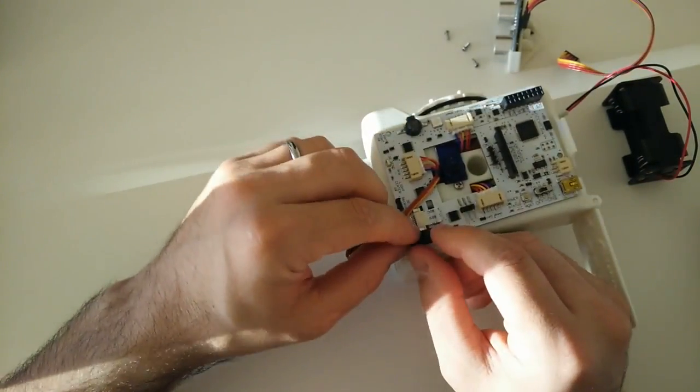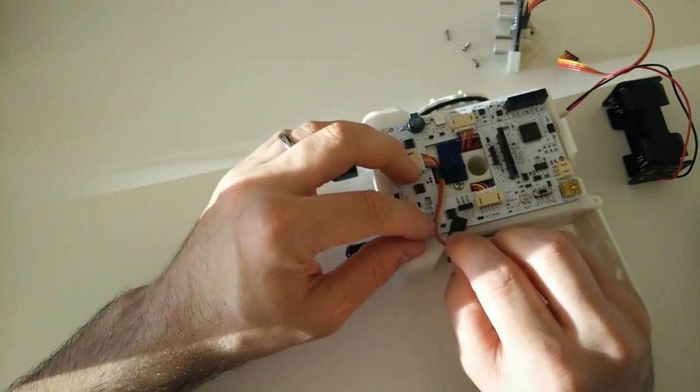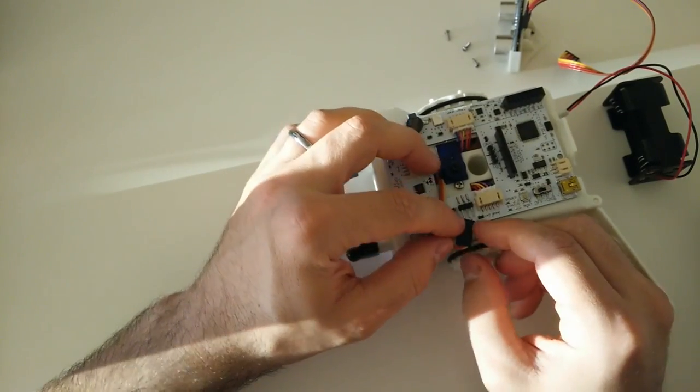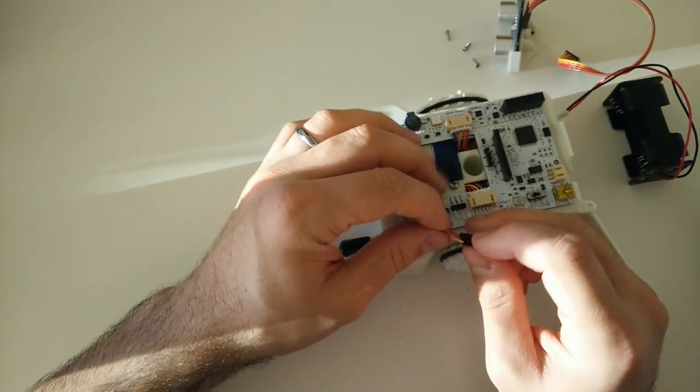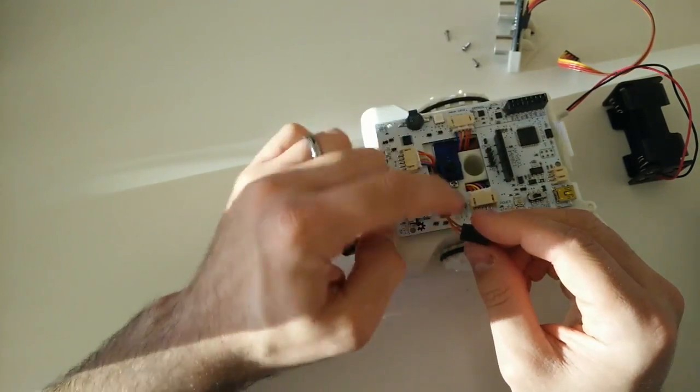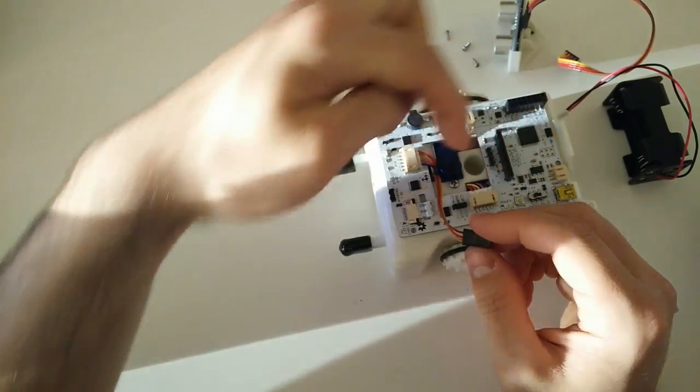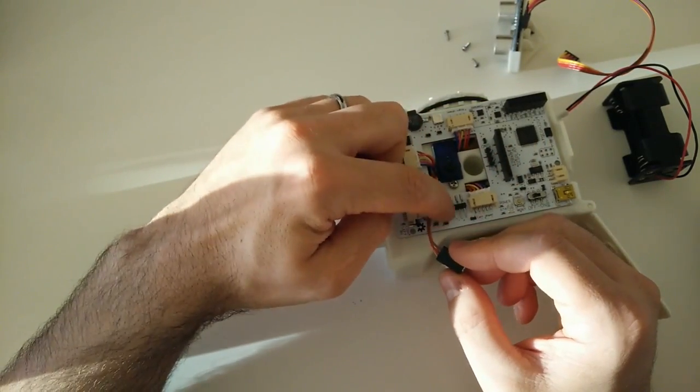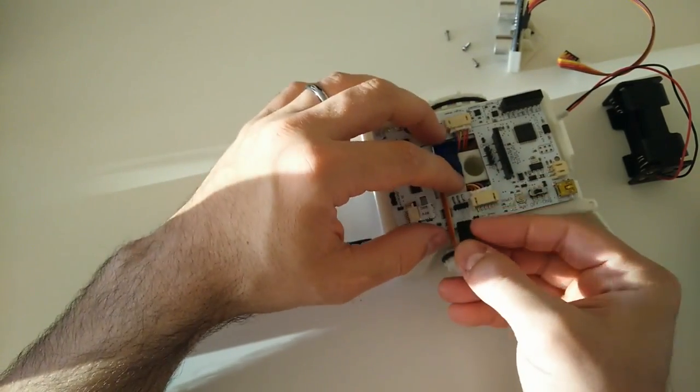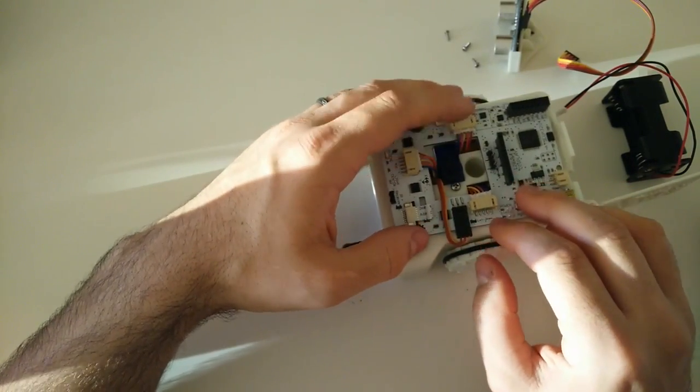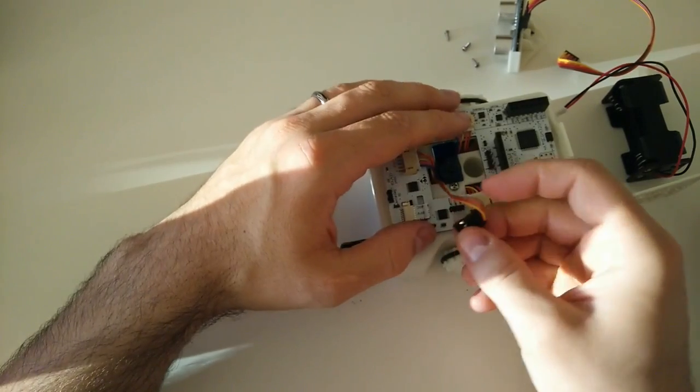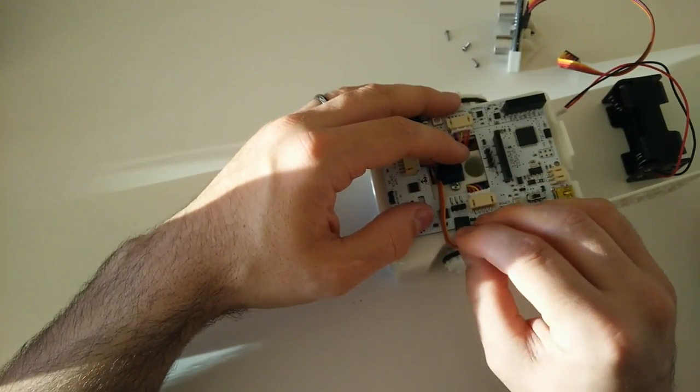We'll continue by plugging in the servo connector. Now if you're confused about which side to plug in, we're going to be plugging in so that the yellow cable that you see here is on the outside and the brown cable is on the inside. Another way to tell is that the metal strips are at the bottom of the cable.